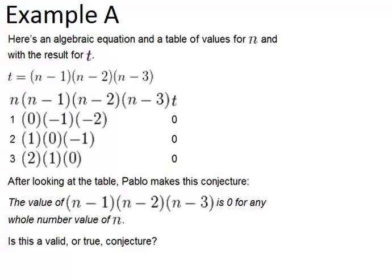In example A, here's an algebraic equation and a table of values for n with the result for t. Notice we start out with this equation: t equals n minus 1 times n minus 2 times n minus 3.